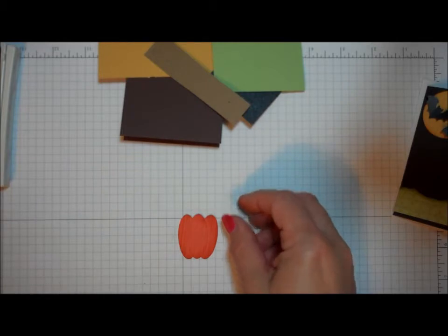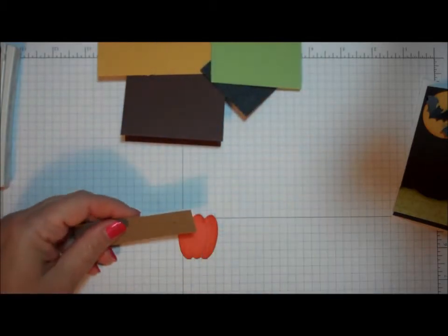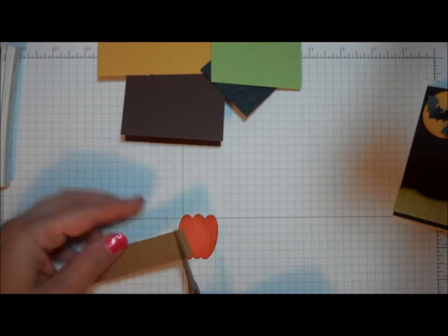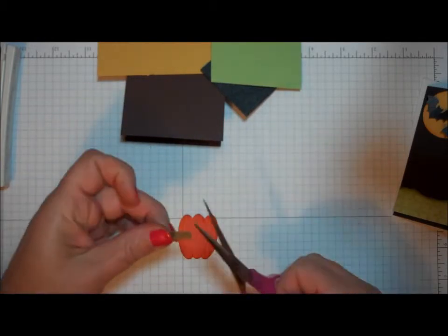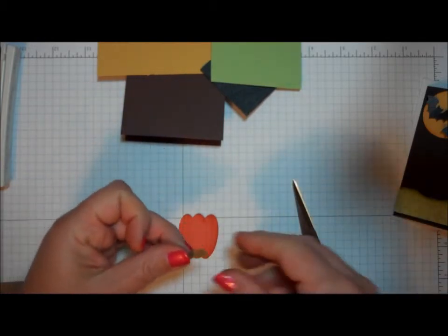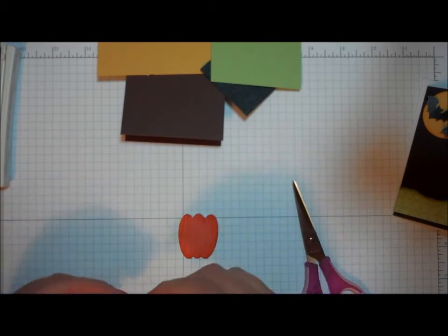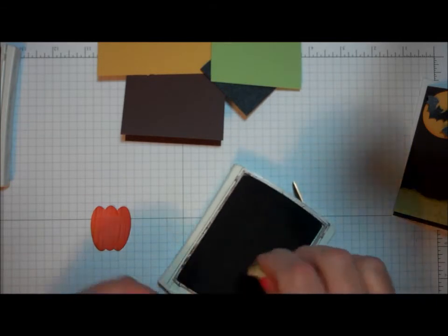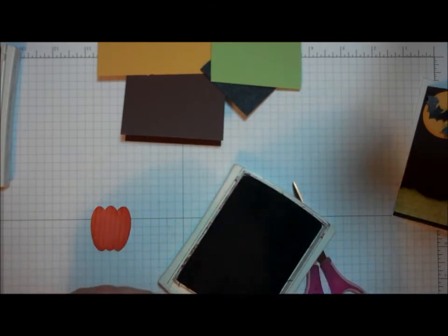And what I needed now is a stem. So I took my piece of chipboard and I just cut a little strip off. I'm going to kind of angle the top there. And I happen to have some brown ink laying around, so I'm going to go ahead and just hit the edges of my stem a little bit.